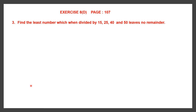Question 3. Find the least number which when divided by 15, 25, 40 and 50 leaves no remainder. That means you must find a number which when divided by 15, 25, 40 or 50, there should be no remainder. We have to find the least such number, because there will be many numbers divisible by all four.